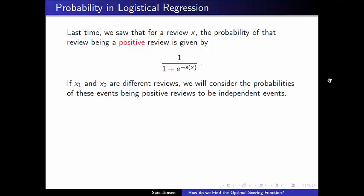In general, if we have two different reviews, X1 and X2, we're going to consider the probability that one of them is positive and the probability that another one of them is positive to be independent events.